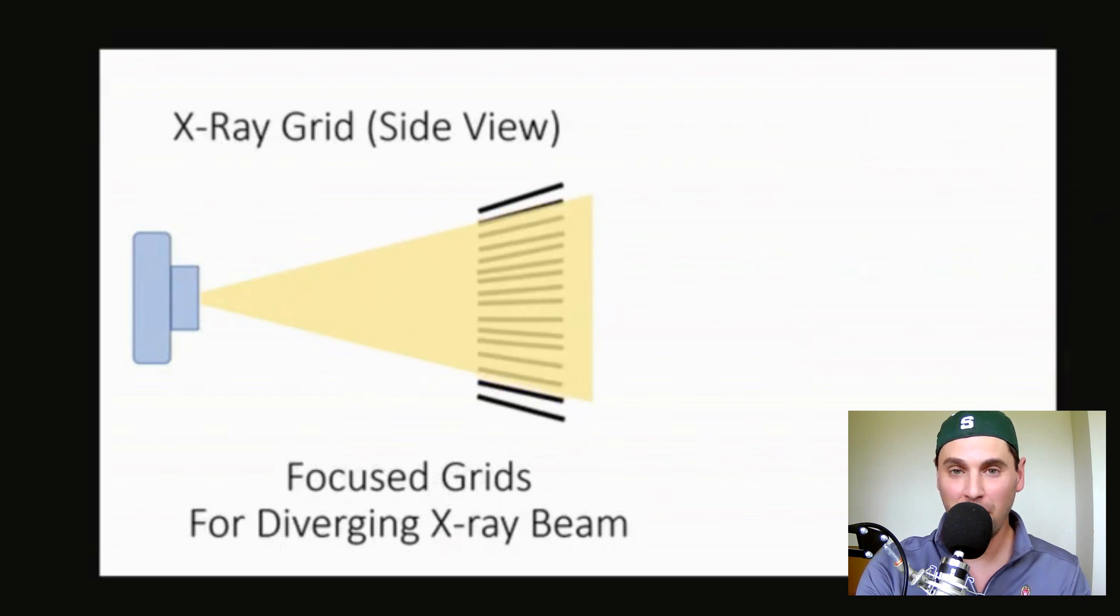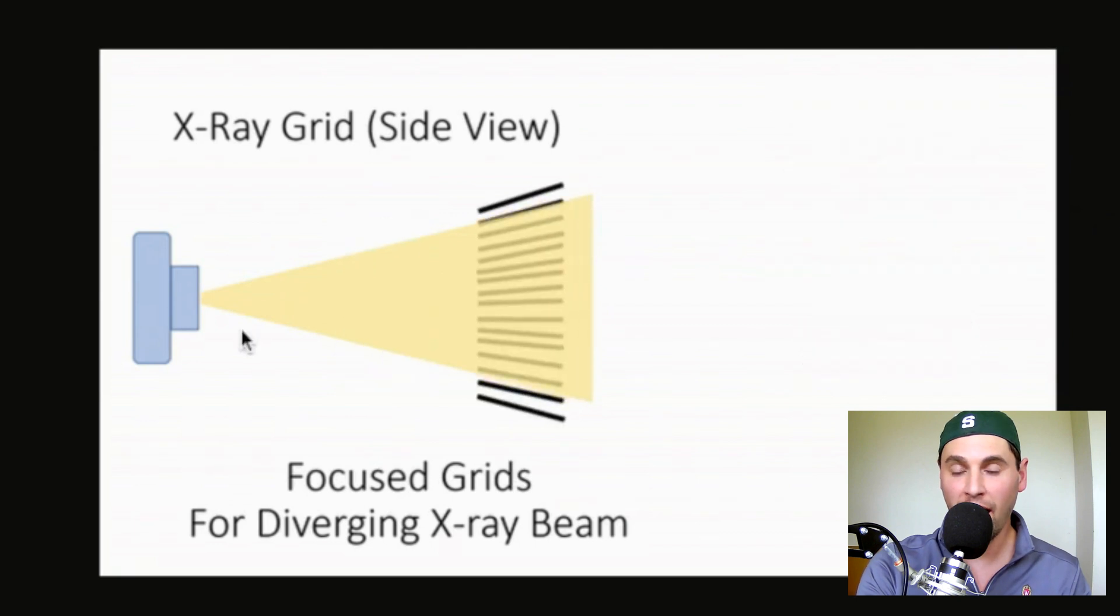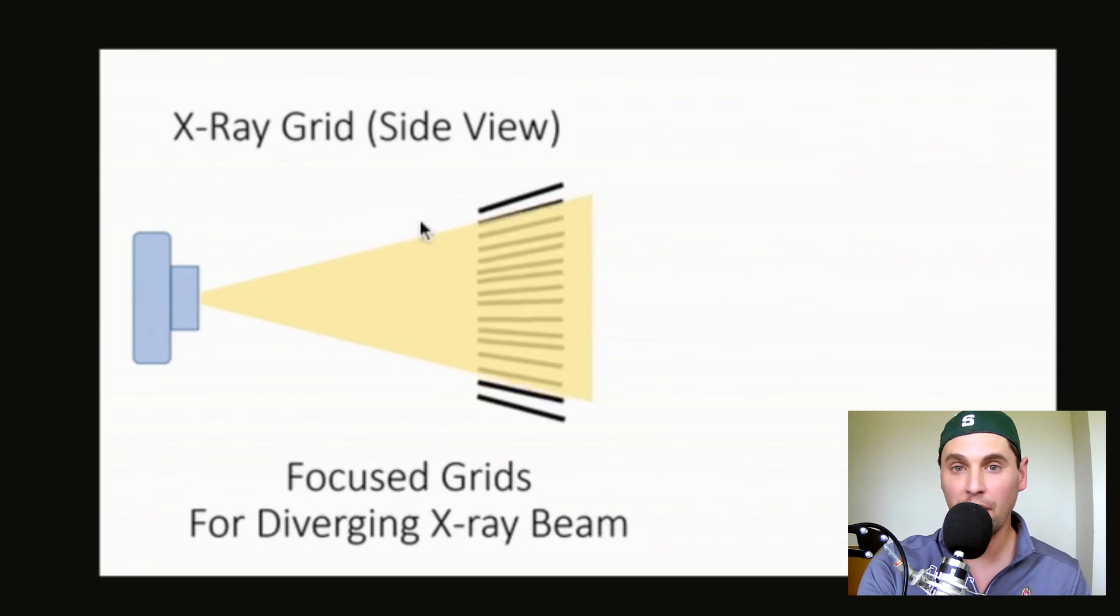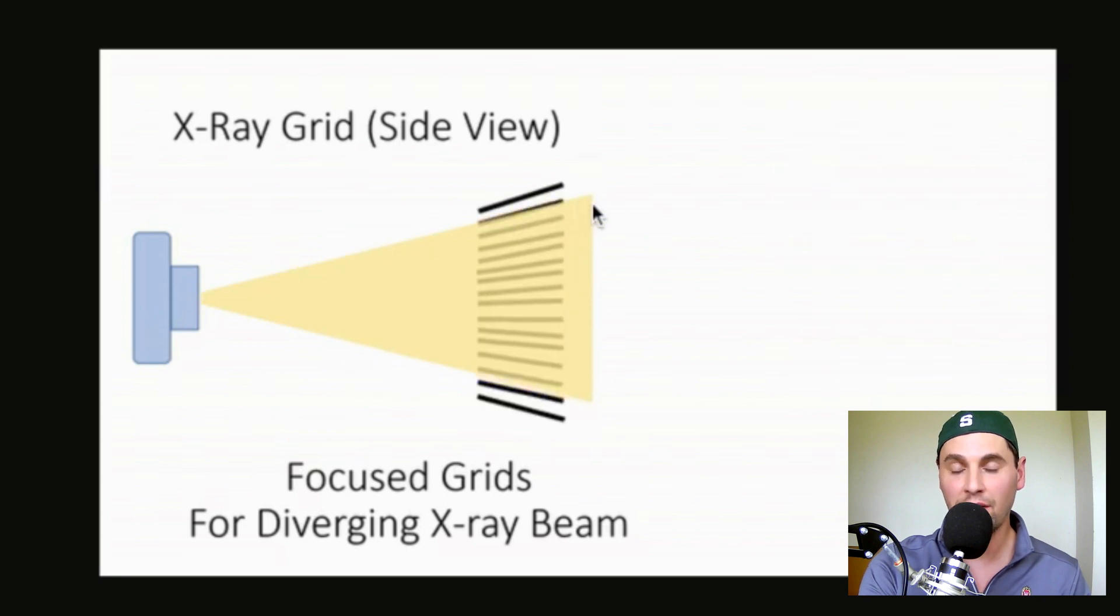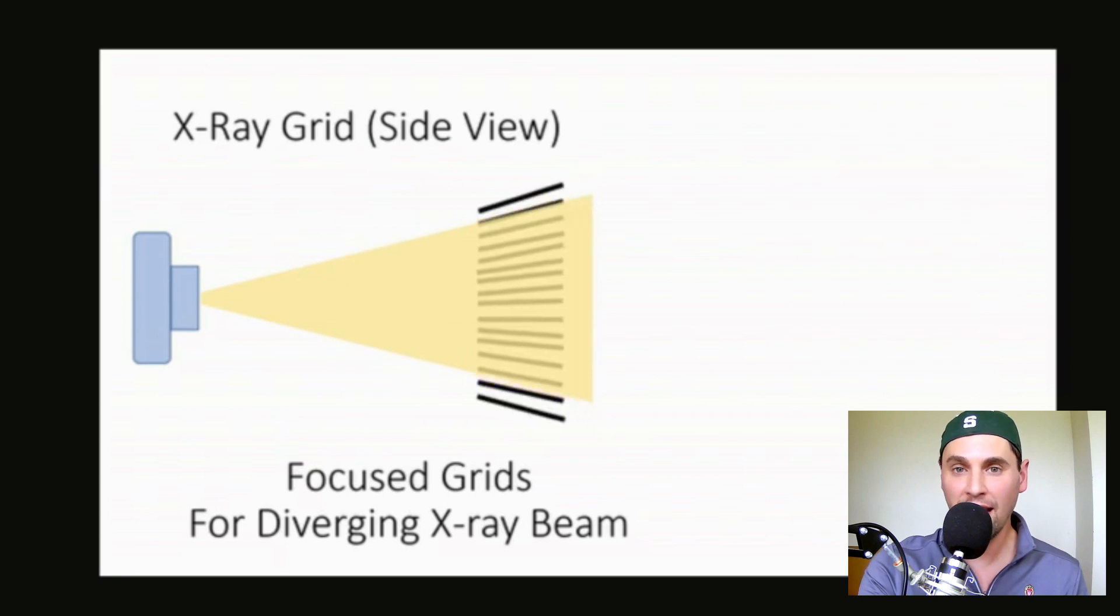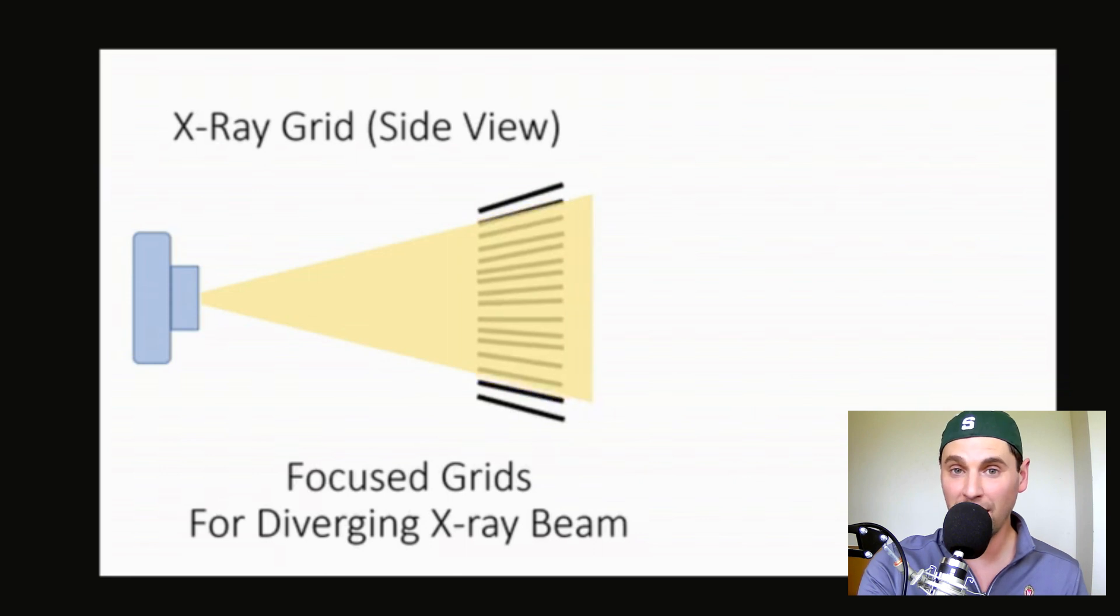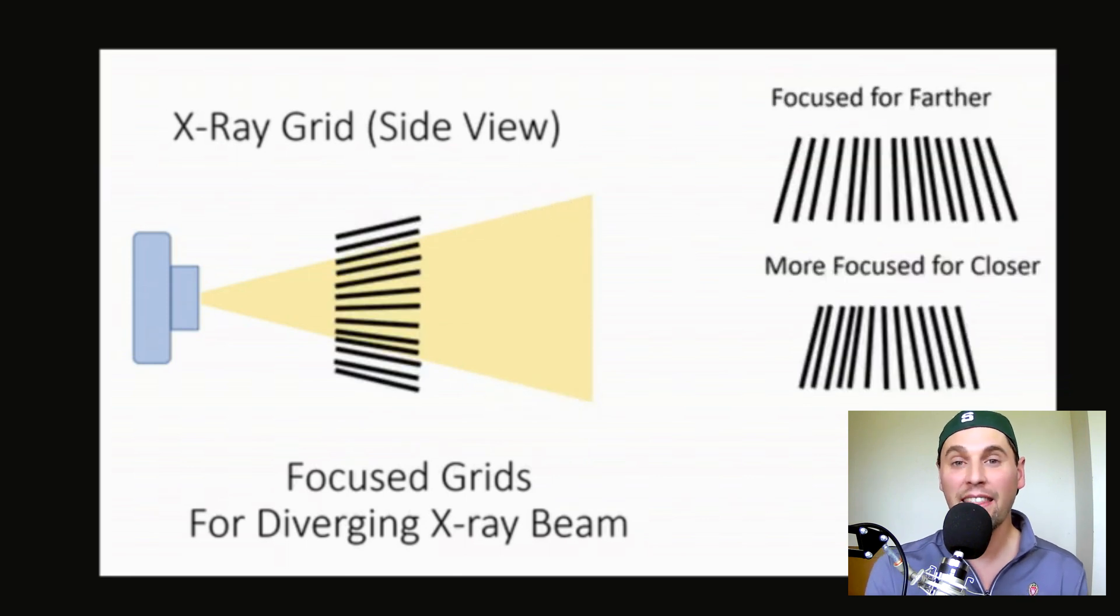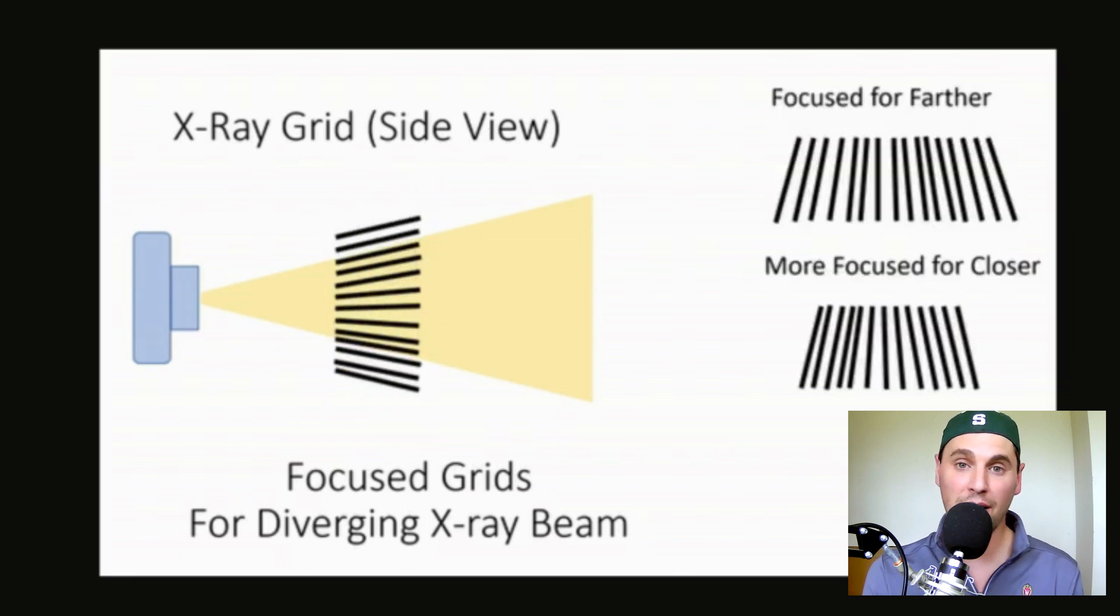Then finally, we're going to talk about the geometry of a focused grid. Again, in x-rays, our x-ray tubes are typically divergent, where x-rays are coming off from a relatively small area on the focal spot, and they're coming off in this cone type of a shape. And that divergent nature means that it would be ideal if the x-ray grid is actually pointed towards that focal spot. That way, we can most preferentially block the scatter photons while letting the primary photons through.